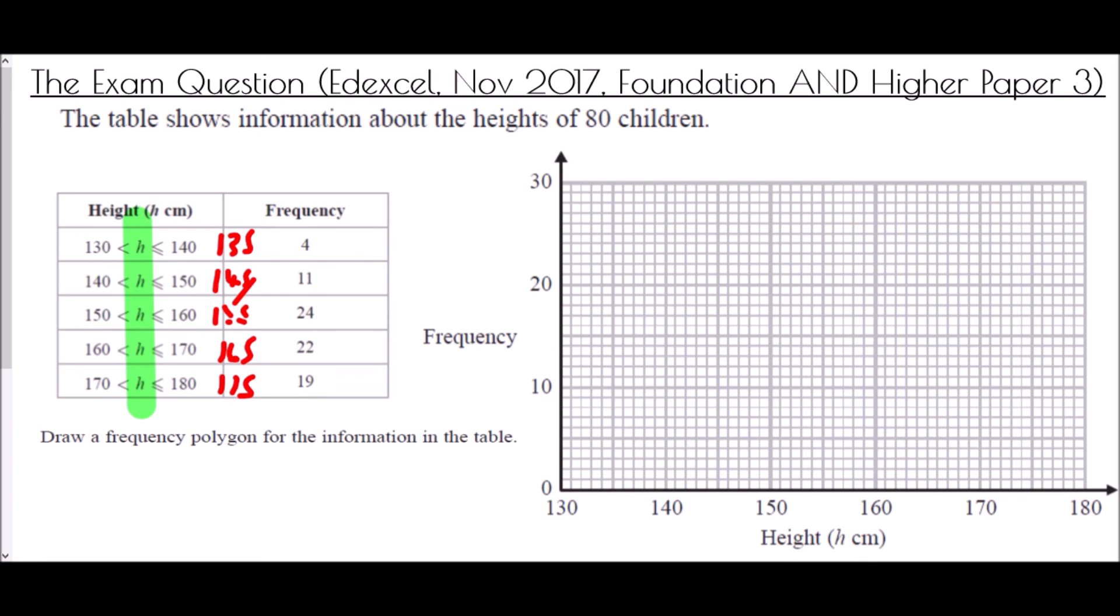So 135 up to 4, there's my first point. 145 going up to 11. 155 going up to 24. 165 going up to 22. And 175 going up to 19. And there we go.